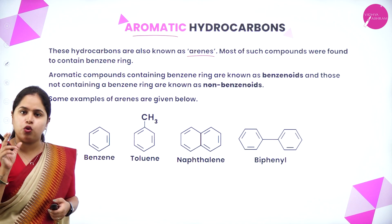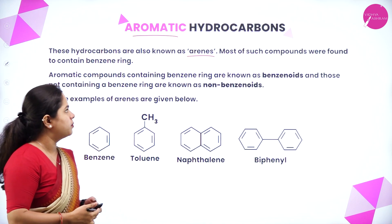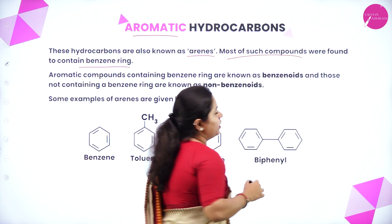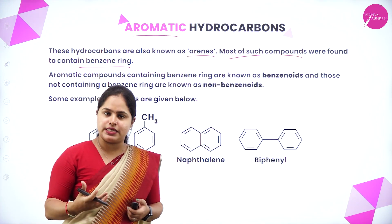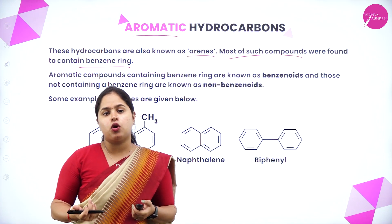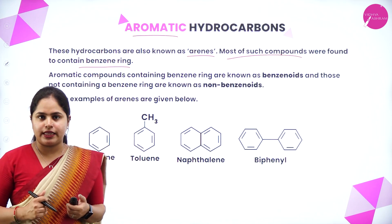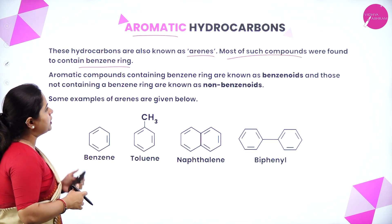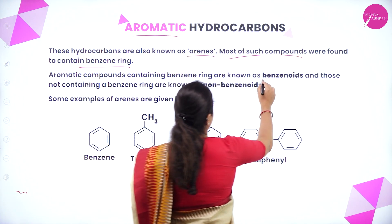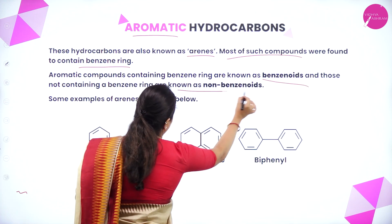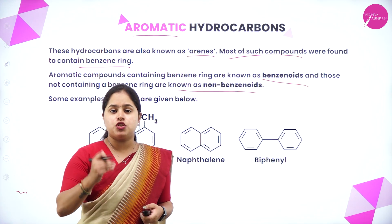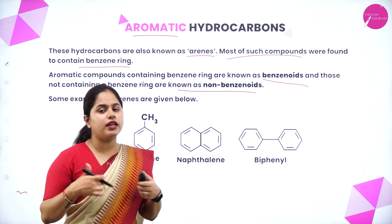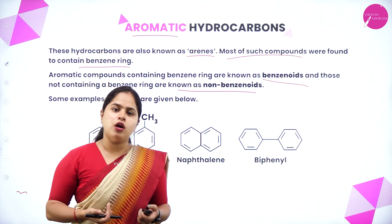The word aranes is another name for aromatic hydrocarbons — don't get confused. Most of such compounds were found to contain a benzene ring. But not all aromatic compounds contain a benzene ring. Aromatic compounds containing a benzene ring are known as benzenoids, and those which do not contain a benzene ring are called non-benzenoid compounds.